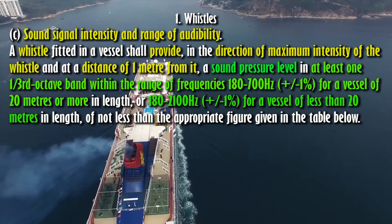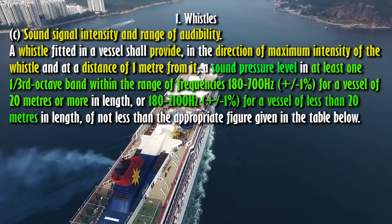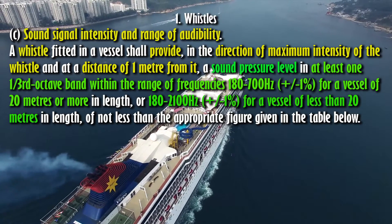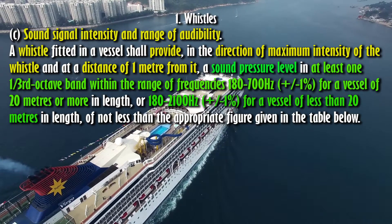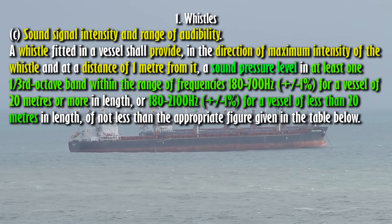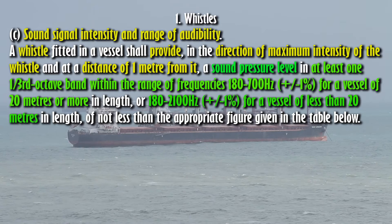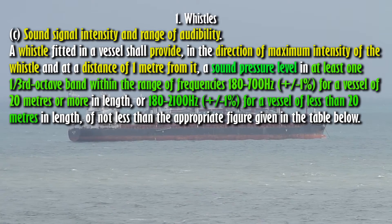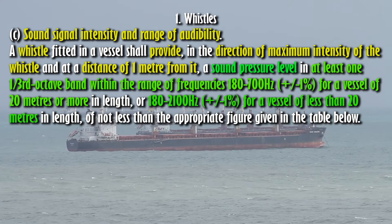C. Sound signal intensity and range of audibility. A whistle fitted in a vessel shall provide, in the direction of maximum intensity of the whistle and at a distance of one meter from it, a sound pressure level in at least one one-third octave band within the range of frequencies 180 to 700 hertz plus or minus one percent for a vessel of 20 meters or more in length, or 180 to 2100 hertz plus or minus one percent for a vessel of less than 20 meters in length, of not less than the appropriate figure given in the table below.